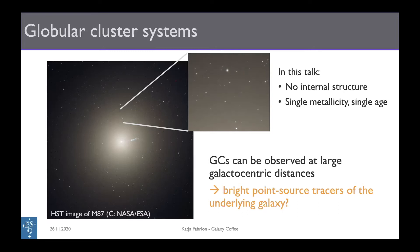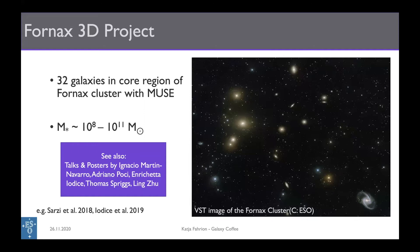I'm putting this here as a question because this is exactly what we want to test with the project I want to show you. We can test this using MUSE data, because with integral field spectroscopy we can test how globular clusters compare to the underlying galaxy using exactly the same data. The data I'm using is from the Fornax 3D project, a large program with MUSE targeting 32 galaxies in the central region of the Fornax cluster at roughly 20 megaparsecs, covering the central regions but also middle and halo pointings up to two or three effective radii.